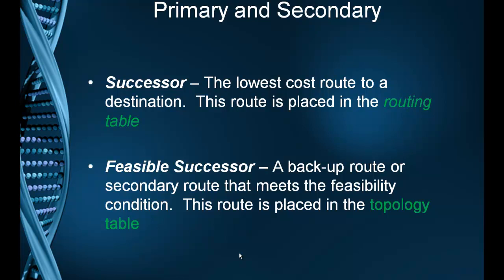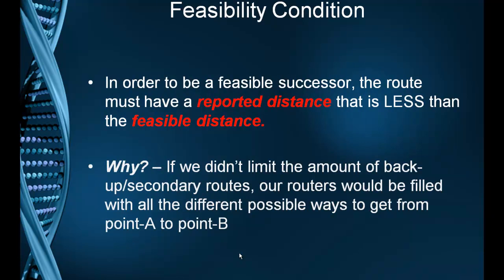Let's talk about the feasibility condition. The feasibility condition says that in order to be a feasible successor, the route must have a reported distance that is less than the feasible distance. That's why they named them something different — so we can make this condition work. In order to be a backup route and be listed in the topology table, the reported distance has to be less than your feasible distance.